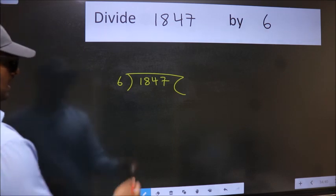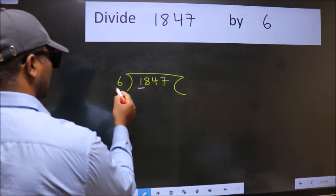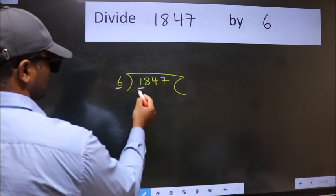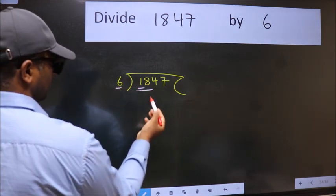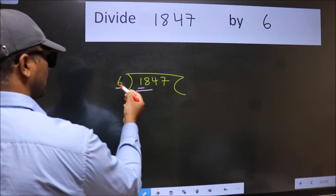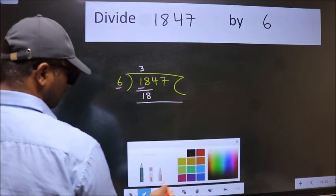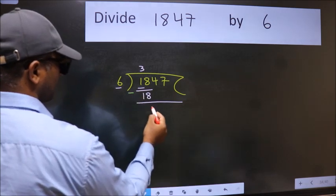Next. Here we have 1 and here 6. 1 is smaller than 6, so we should take two numbers: 18. When do we get 18 in 6 table? 6 threes 18. Now we should subtract. We get 0.